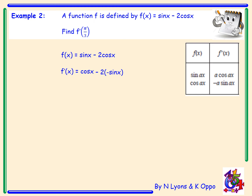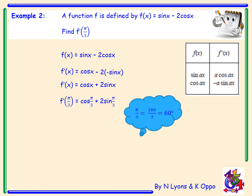From the table, the derivative of sin x is cos x — here a is just 1. For the second term, -2 is just a multiplier; differentiating cos x gives minus sin x, so that term becomes +2 sin x. Therefore f'(x) = cos x + 2 sin x. Now I want to evaluate that at π/3. Since π/3 = 180/3 = 60°, this can appear on a non-calculator paper.